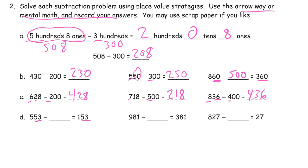Same thing here. We get to keep the 53, so we're only subtracting hundreds. And then same thing here. We're just subtracting hundreds.